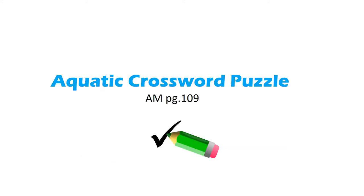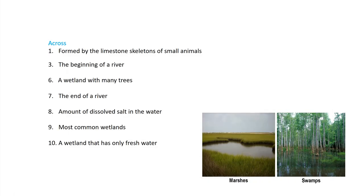Okay, let's move on to our aquatic crossword puzzle. Grab your pencil and let's check your work. Let's look at the words across first. Number one — formed by the limestone skeletons of small animals — that answer was coral reef. We said that corals are live animals. Number three, the beginning of a river is called a headwater. Number six, a wetland with many trees — that was swamp.